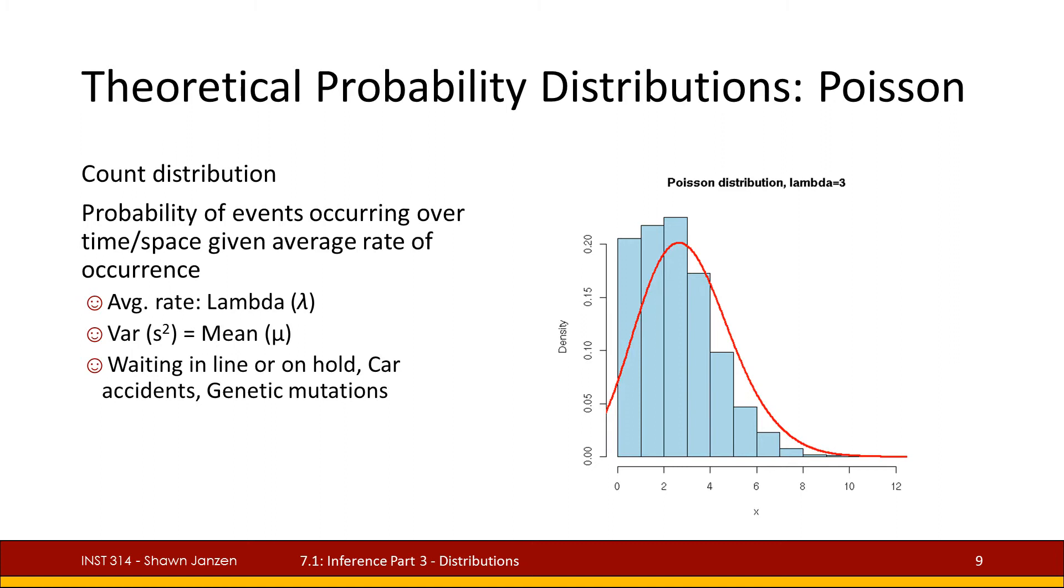This one is the probability of events occurring over a given space and time given an average rate of occurrence. So we're saying that something can happen on average and given that average rate we're going to see some particular event occurring over space and time. That average rate is something we define as lambda and it is characterized that the average of lambda or its mean is equal to its variance or standard deviation squared.